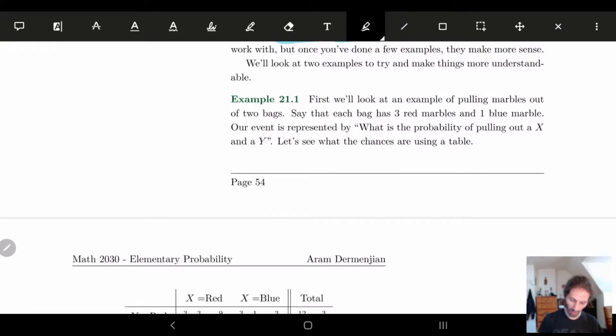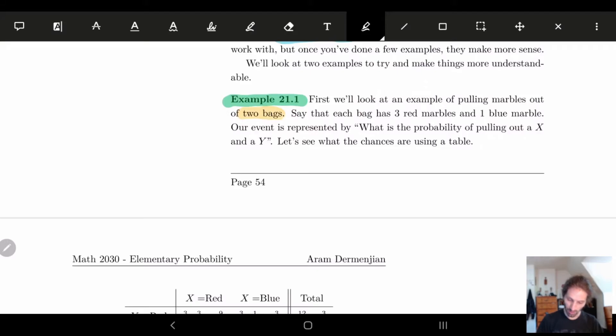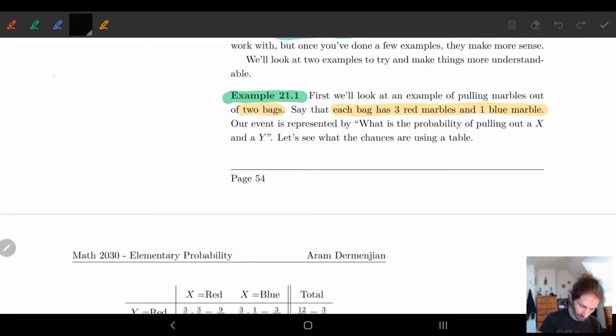The first example is we're going to look at pulling marbles out of two bags. So I have two bags and I have marbles in each bag. In the first bag, let's highlight the things we know: two bags. Each bag has three red marbles and one blue marble. So I know that each of them basically have the same distribution inside of it. So now the question we're going to ask is what is the probability of pulling out an x and a y?